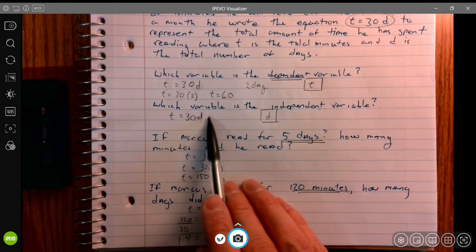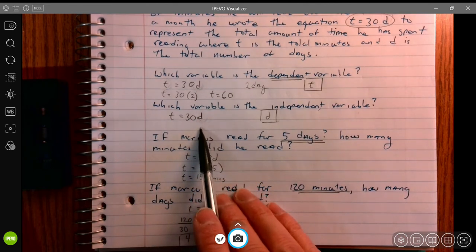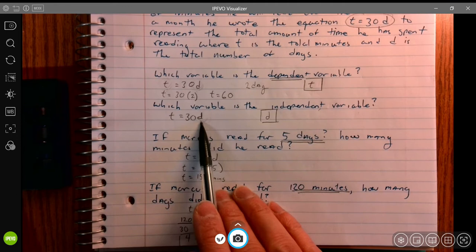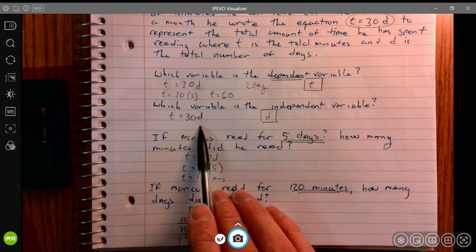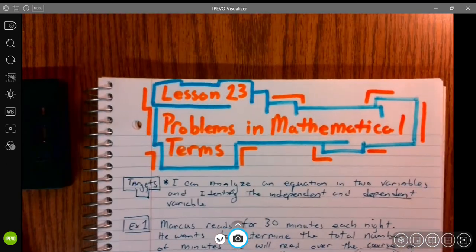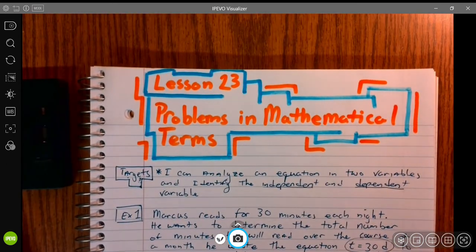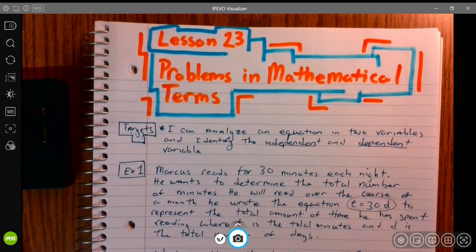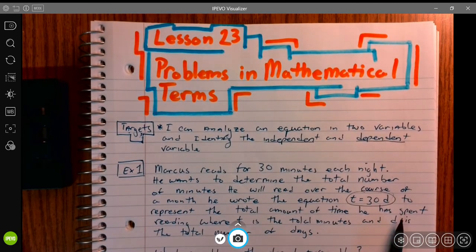Which variable is the independent variable? It's the one that varies. The number of days can be 1, 2, 3, or a million. It's independent, it can be what it wants. This was lesson 23, Problems in Mathematical Terms. The target for today was I can analyze an equation in two variables and identify the independent and dependent variables.